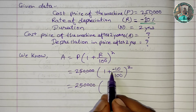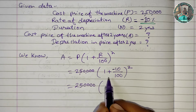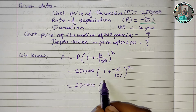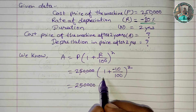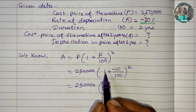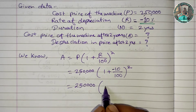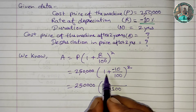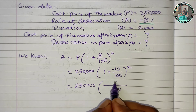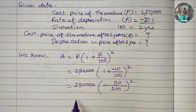Since this is a minus (depreciation), we get 100/100 minus 10/100, which gives us (100 - 10)/100 = 90/100. So it becomes 2,50,000 × (90/100) raised to 2.